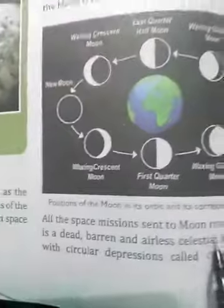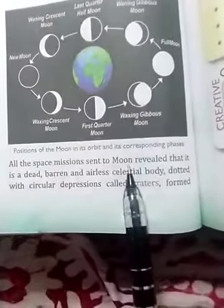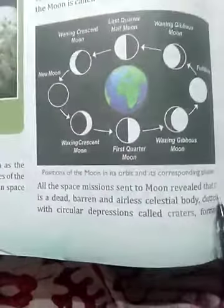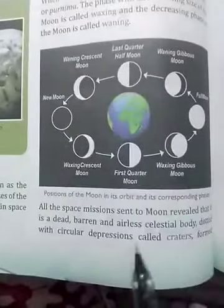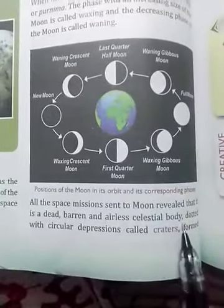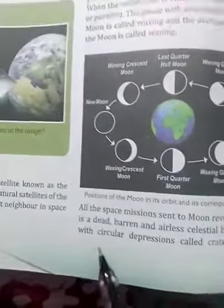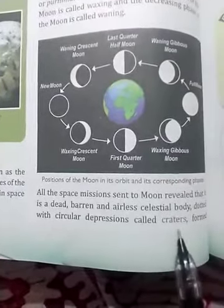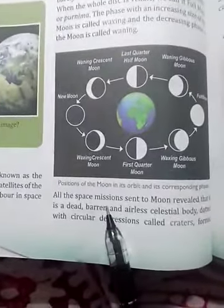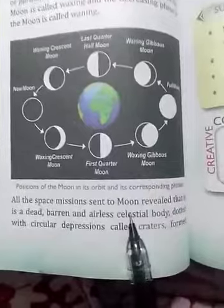All the space missions sent to the moon revealed that it is a dead, barren, and airless celestial body dotted with circular depressions called craters.